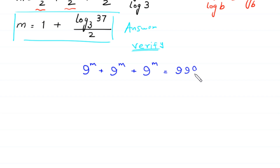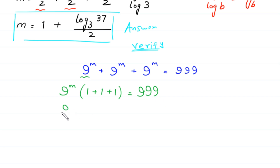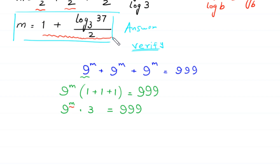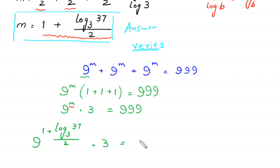Now we verify: the original equation is 9 to the power m plus 9 to the power m plus 9 to the power m is equal to 999. First, we factor out 9 to the power m: 9 to the power m times 3 is equal to 999. In place of m, we put the value m equals 1 plus log base 3 of 37 over 2. So 9 to the power of (1 plus log base 3 of 37 divided by 2) times 3 is equal to 999.